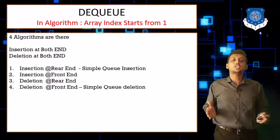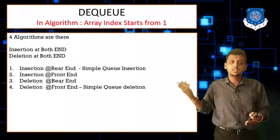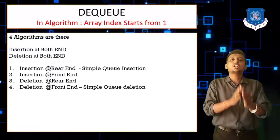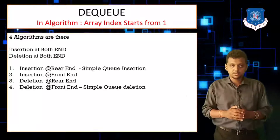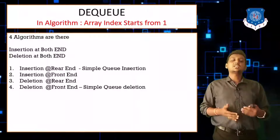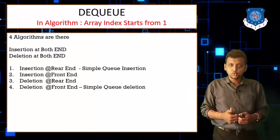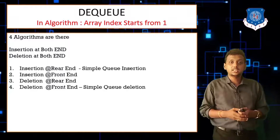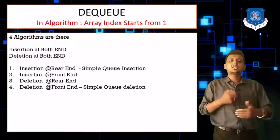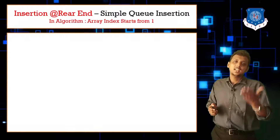Let's take a quick review of insertion at rear end, which we can also call the double-ended queue insertion at rear end. This algorithm is totally similar to simple queue insertion. The function name is INS_at_rear_end, and it takes parameters front, rear, and Q. If rear is greater than or equal to N, then it is overflow. Otherwise, increment rear pointer, assign Q of R equal to Y, and if front pointer is at 0, set it to 1.